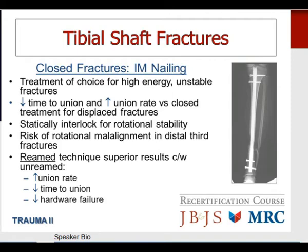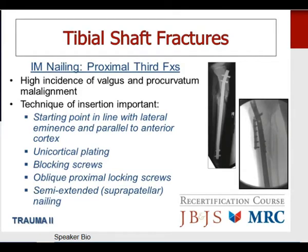Proximal third tibial shaft fractures deserve special mention: there is a high incidence of valgus and procurvatum malalignment with intramedullary nailing. The technique of nail insertion is critically important — the starting point should be in line with the lateral eminence on the coronal plane and parallel to the anterior cortex on the sagittal plane. Useful treatment adjuncts include unicortical plating, blocking screws placed where you do not want the nail to go, oblique proximal locking screws, and a semi-extended or suprapatellar nailing technique which greatly improves alignment control in proximal third fractures.